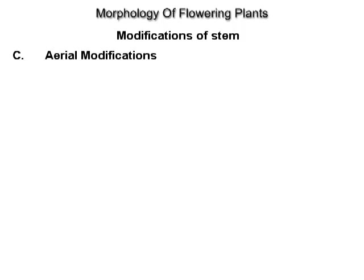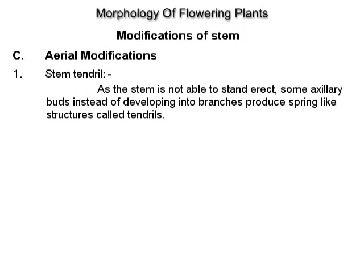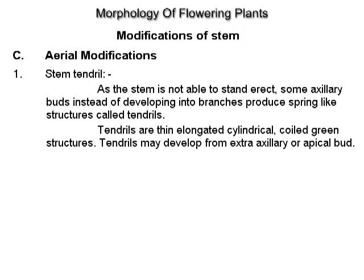Aerial modifications. Stem tendril: as the stem is not able to stand erect, some axillary buds instead of developing into branches produce spring-like structures called tendrils. Tendrils are thin, elongated, cylindrical, coiled, green structures. Tendrils may develop from extra axillary or apical buds. Examples: Cucurbita, Passiflora.